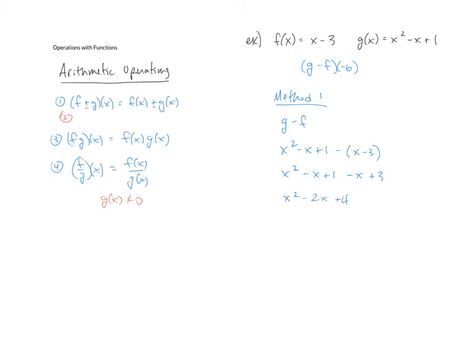Now we would take this and evaluate at negative six. So if I take x equal negative six when we do this we end up with 52. So that's method one.